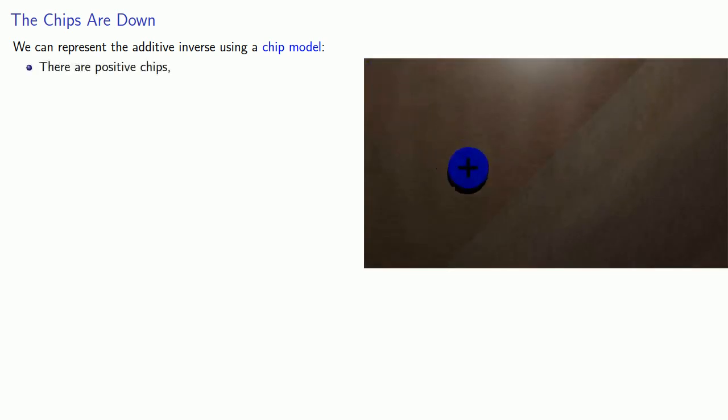It can be helpful to have some sort of picture of what's going on when we're working with signed numbers. And so we can represent the additive inverse using what's called a chip model. It's called a chip model because we have positive chips representing positive amounts and negative chips representing negative amounts.